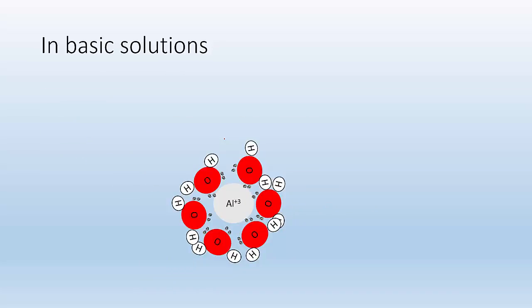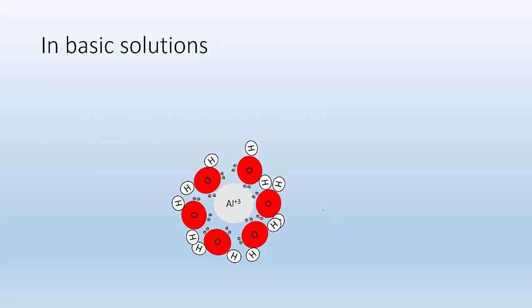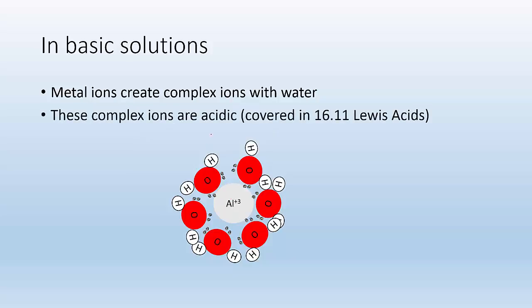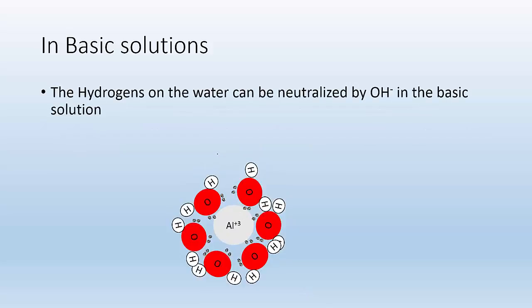Cool. So in basic solutions, alright, what happens is this aluminum ion gets surrounded by water, right? And we're making a complex ion. So metal ions create complex ions with water surrounded by this water. These complex ions are acidic. We talked about this back in 16.11 when we talked about Lewis acids. So basically, the positive cation is pulling electron density towards it, which is going to weaken the OH bond, kicking off the H+. Boom. It gets kicked off because it's pulling electron density towards that cation, which weakens this bond here. That's what happened.